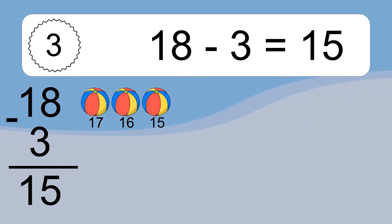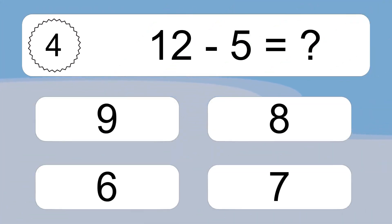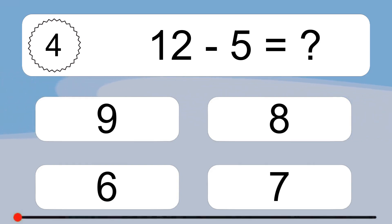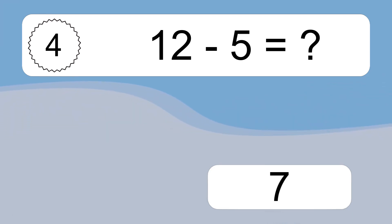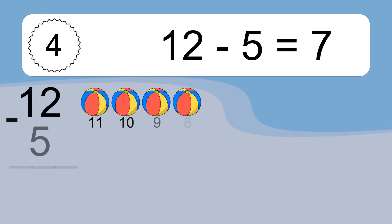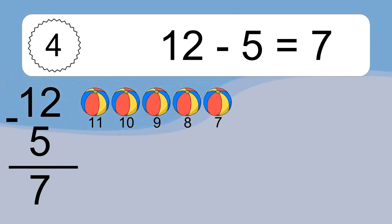12 minus 5 equals what? 12 minus 5 equals 7. Let's count it. 11, 10, 9, 8.